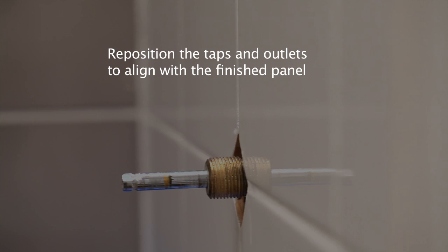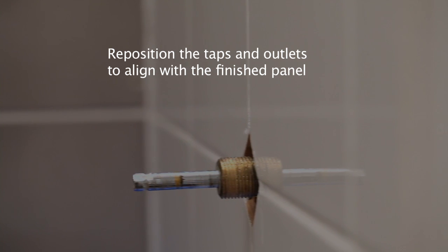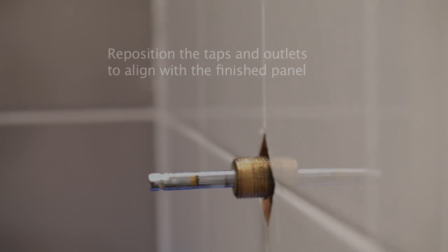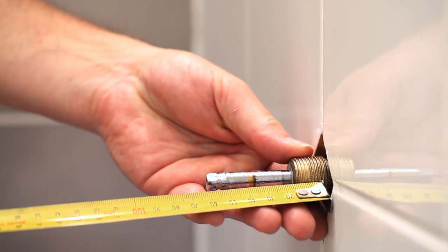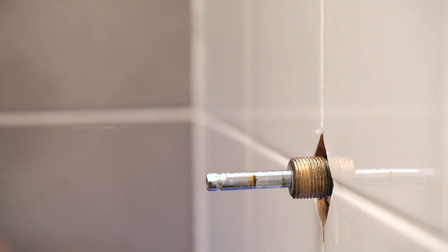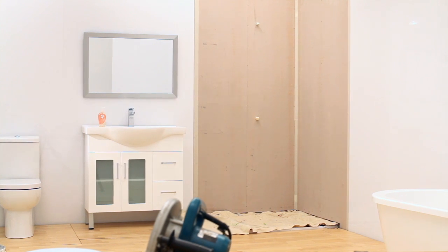The Xenolite Plus sheet is 6mm thick and will add to the thickness of your wall. This needs to be accounted for when fitting taps, fixtures and shower fittings.